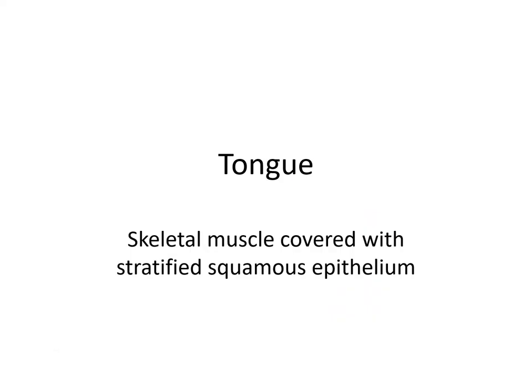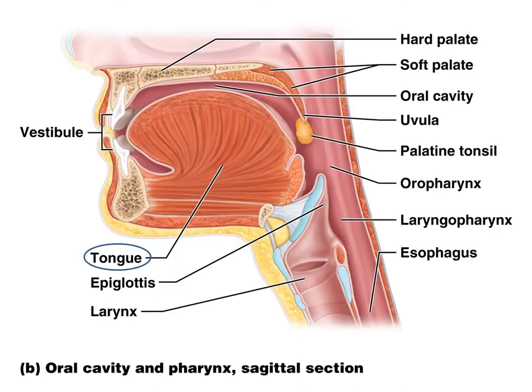The tongue — you don't really think about it, but your tongue is important not only for digestion but also for speaking. The tongue is skeletal muscle covered with stratified squamous epithelium, which makes sense because sometimes we burn our tongues on very hot things. If it wasn't for the stratified squamous epithelium, we'd be in a lot more pain. Here's our tongue.